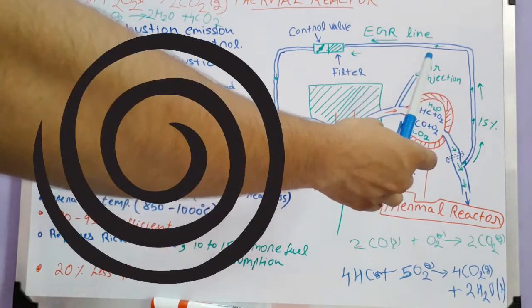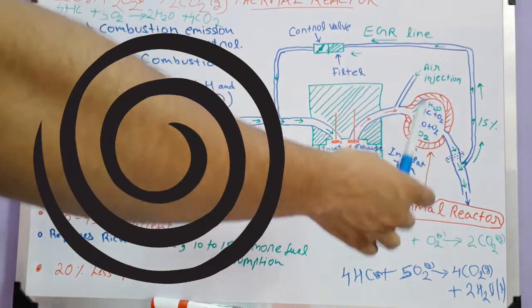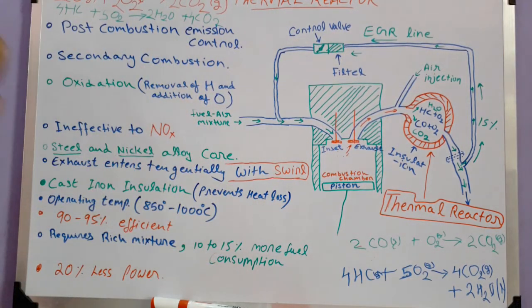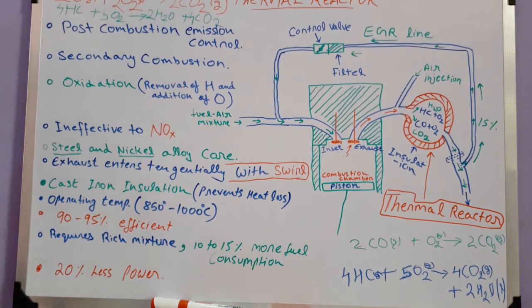The main advantage of this swirling effect is that it provides sufficient time for re-combustion, because it is necessary to have adequate time for burning hydrocarbons and carbon monoxide. Its size should be sufficiently large so that combustion can take place and there should be sufficient time.